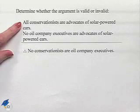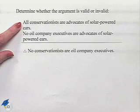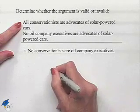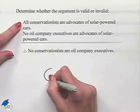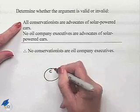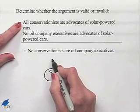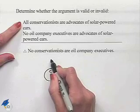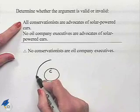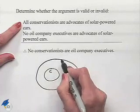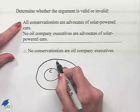All conservationists are advocates of solar-powered cars. We're going to have a circle for conservationists, and we're going to have a circle for advocates of solar-powered cars, and we're going to enclose the circle for conservationists inside that.